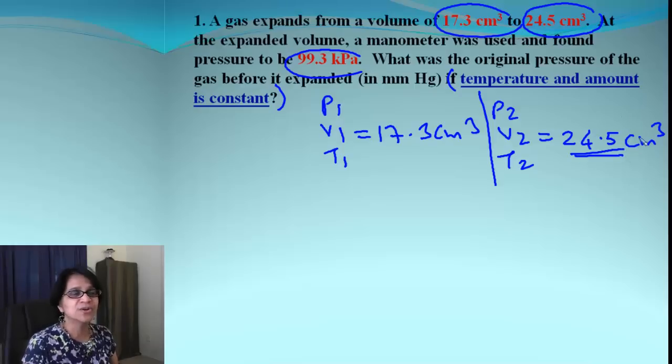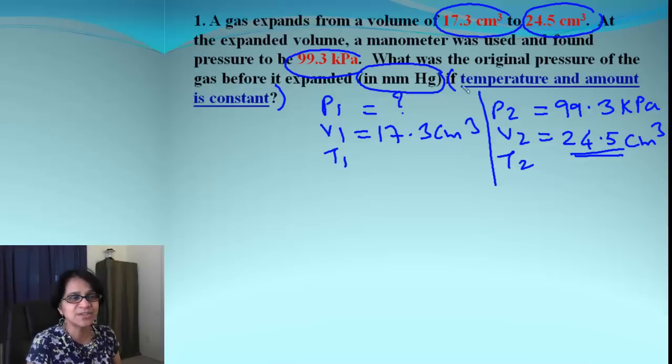So on the expanded volume, manometer was used and found to have a pressure of 99.3. So that must be P2 value and that's in kilopascal. So we have to find out what is the original pressure of the gas. Now look what's asked. It's asking you to find out the pressure in millimeter of mercury, not in kilopascal.